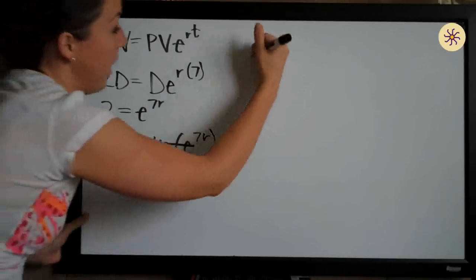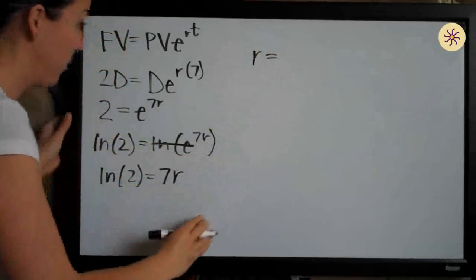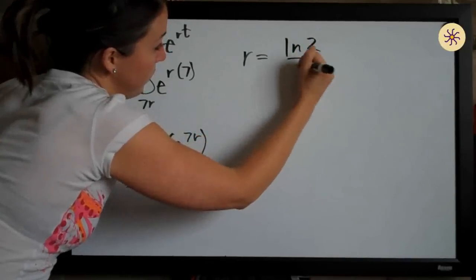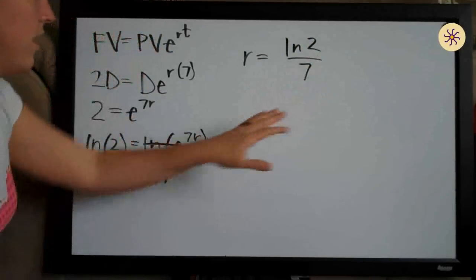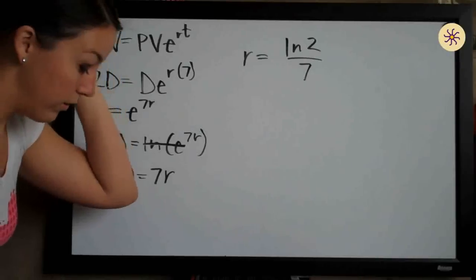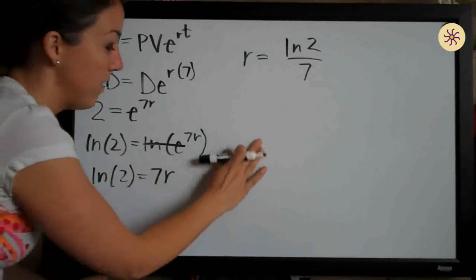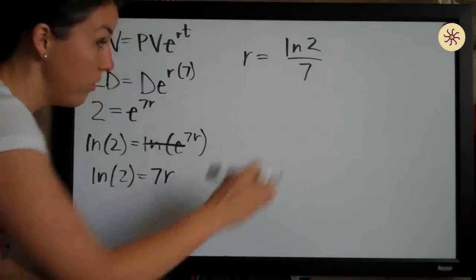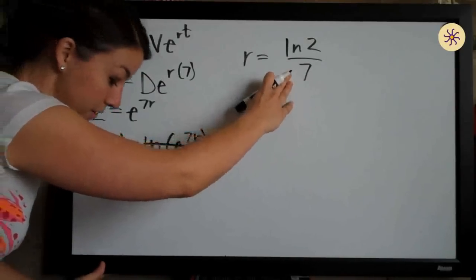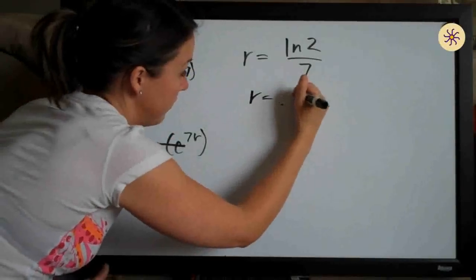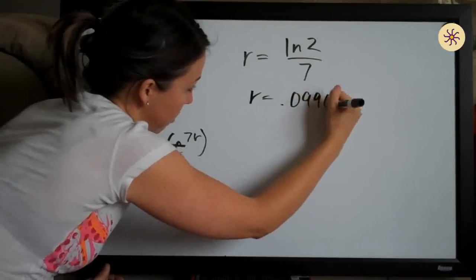We can divide both sides by 7 and we'll be left with R = ln(2)/7. So you could leave the rate like this, or if you want to find what it is in terms of a decimal approximation, you can do ln(2)/7 into your calculator and you get R ≈ 0.0990.